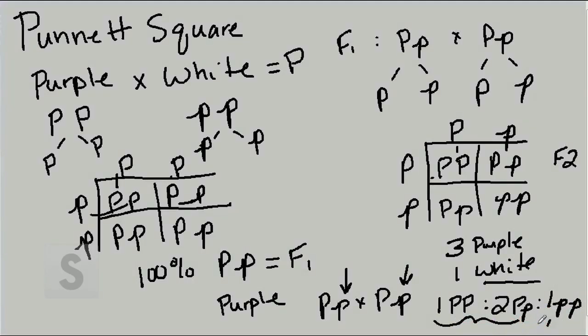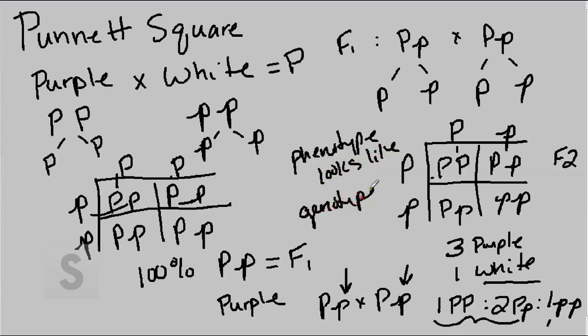What an individual looks like is known as its phenotype. What an individual has with regard to genes is known as its genotype. And so this is genetic makeup. So in this particular case, our phenotypic ratio of our F2 offspring would be 3 purple to 1 white.